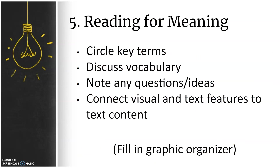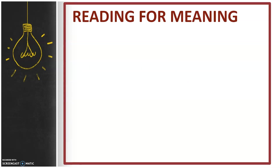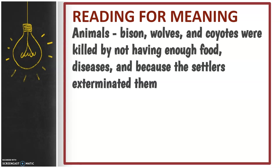Typically, this is the stage of the lesson where I have students work collaboratively to find evidence that pertains to the purpose for reading. For this particular text, students can find evidence of any environmental impact. Another option is to jigsaw and have groups or pairs find impacts the settlers had on either animals, plants, or people. Students typically note that animals, including bison, wolves, and coyotes, were killed by not having enough food, by diseases, and because the settlers exterminated them.